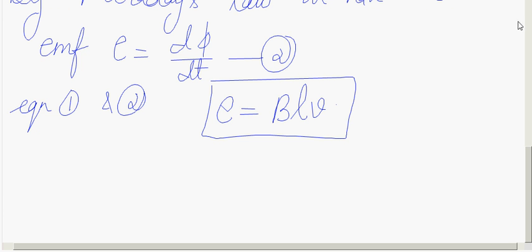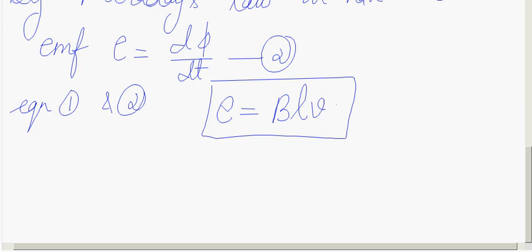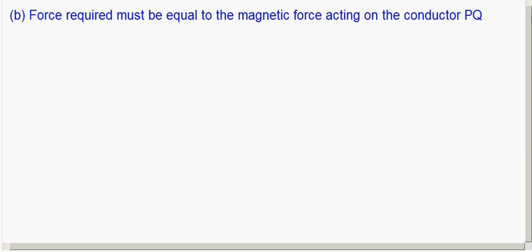Yes, there is current, because it is a closed loop. Whenever there is an induced EMF, current starts flowing through the closed loop. Let the current in the loop be I. The magnetic force is given by F = BIL sin90°.